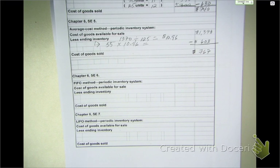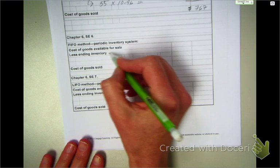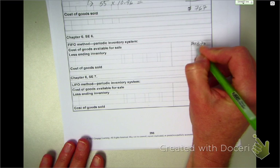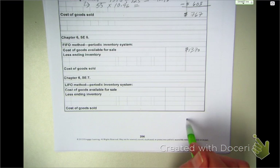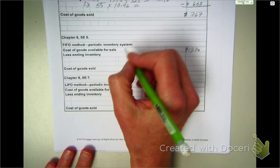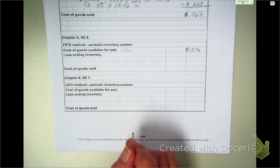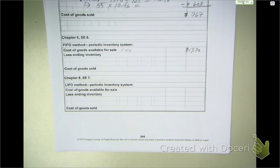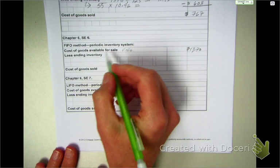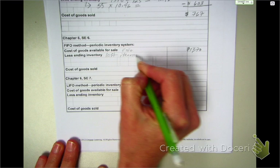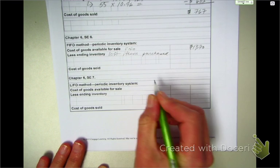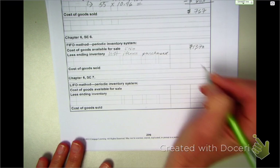FIFO. FIFO method. Again, we have that same 1370 units. And now, under the FIFO method, we're going to value our ending inventory. FIFO says our cost of goods sold is first in, first out. So, what's our ending inventory going to be made up of? FIFO says first items in are first items out. What's our ending inventory going to be made up of? Is it going to be the first items or the last items? Last. If I'm operating under FIFO, my ending inventory is going to be my last items purchased. How many units do I have to get up to for my ending inventory?